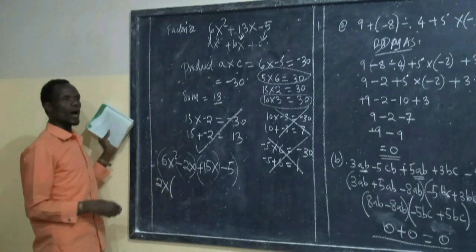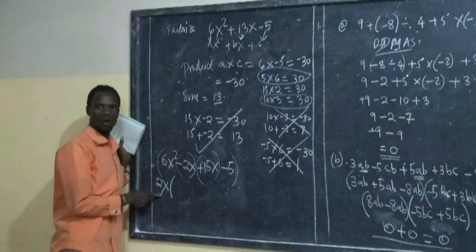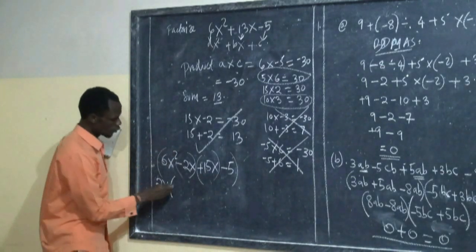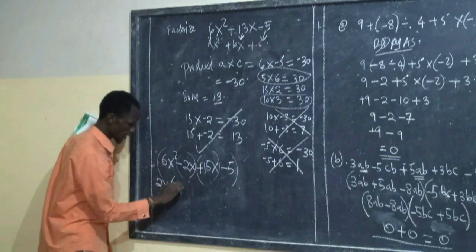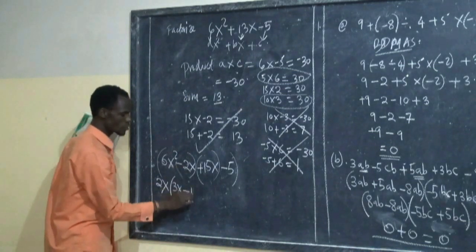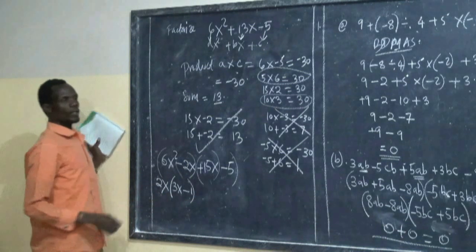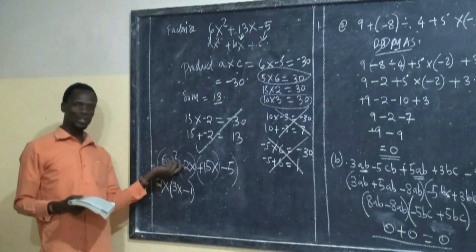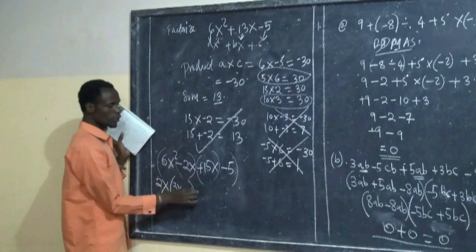If you have taken 2x as a common factor, 6x² divided by 2x you get 3x. Then here you have left is 1. You take this one simply because when you expand this part, you find the origin. Then the same applies to here.